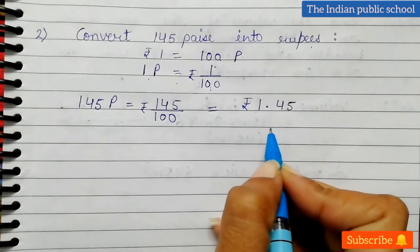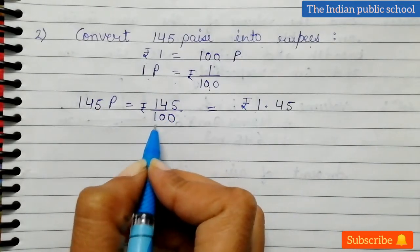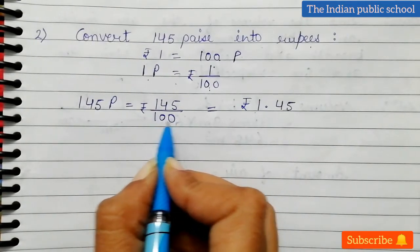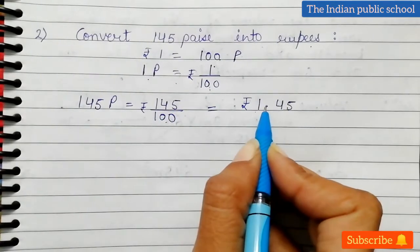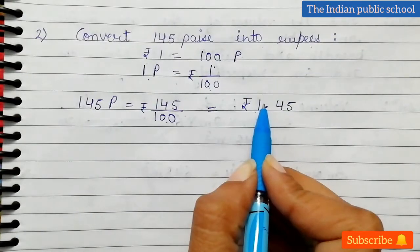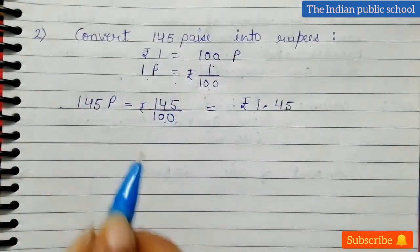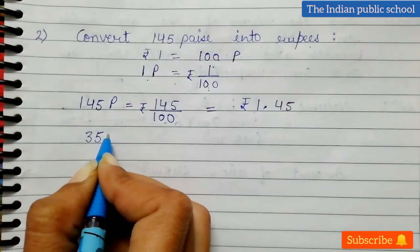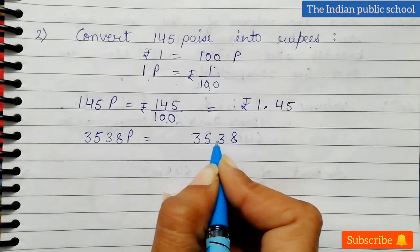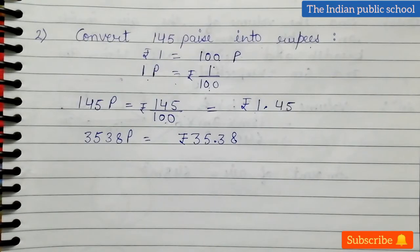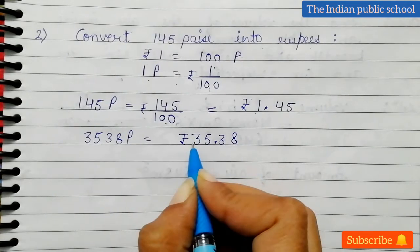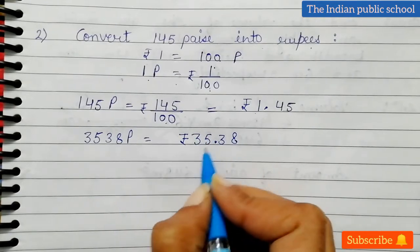That is 1 rupee 45 paisa, because the amount does not convert completely into whole rupees when you divide. But you can do this easily: if you are dividing by 100, which has two zeros, directly put the decimal after two digits from the back. Whenever you convert a paisa amount into rupees, put the decimal after two digits from the back and the solution comes. For example, 3538 paisa — just put the decimal after two digits from the back — becomes 35 rupees and 38 paisa.